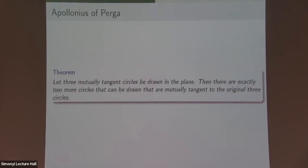Let's get started with our main topic of today. Something that dates back to Apollonius is this theorem where he says if you take three tangent circles in the plane, you can draw exactly two more circles that are tangent to the original three. We don't exactly know what Apollonius did with this problem — we just have some account that he studied it in some way — and this is really the origin of what we're going to do today.